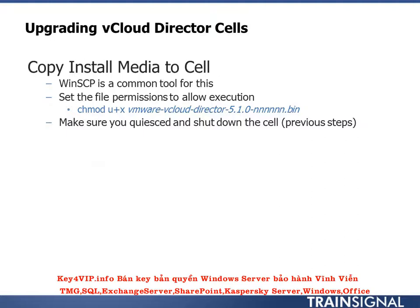Once all cells are quiesced and you're within your maintenance window, copy the install media to the cells. I use WinSCP — a file copy tool for transferring between Windows and Linux. I usually have a prep folder within the vCloud Director cell. You'd download the correct upgrade version from the VMware website and copy it over. For more detail on the install layout, refer to the lesson where we install vCloud Director on Red Hat Linux, as we'll essentially repeat that process for the upgrade.